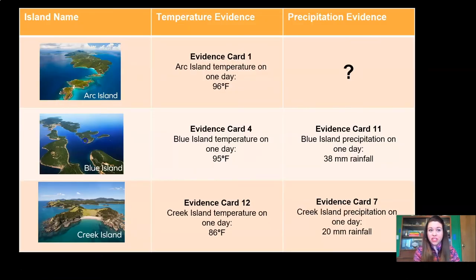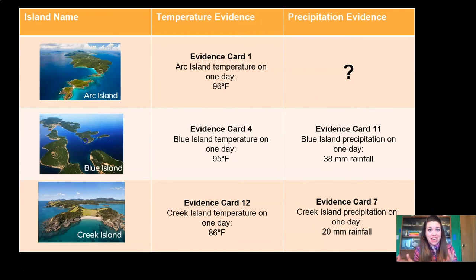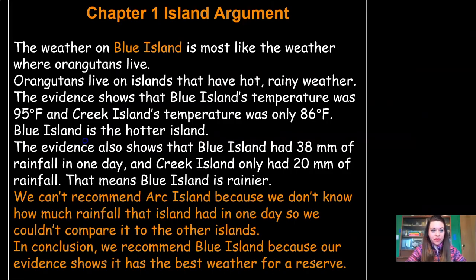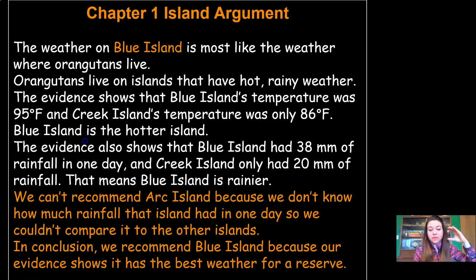We also need to prove to the Wildlife Protection Organization that we reviewed all three islands and did our best to compare. So we need an explanation for why we didn't select Arc Island. We didn't have enough evidence because we didn't have a precipitation reading for how much rainfall fell in one day. So we can't recommend Arc Island because we don't know how much rainfall that island had in one day, so we couldn't compare it to the other islands. In conclusion, we recommend Blue Island because our evidence shows it has the best weather for a reserve. I also added a conclusion to wrap it up and restate our claim.